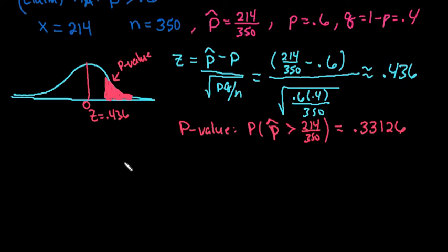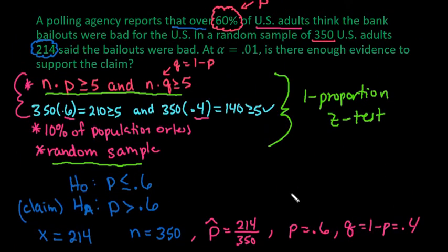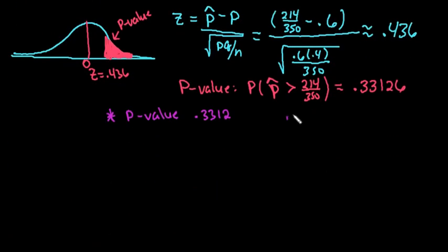Remember that the P value, we have to compare P value to alpha. So if we take our P value of 0.33126 compared to our alpha, and I forgot to write that down, alpha is 0.01. So if we compare this to 0.01, which is our alpha, this is definitely greater than. And anytime your P value is greater than alpha, you fail to reject H sub zero.